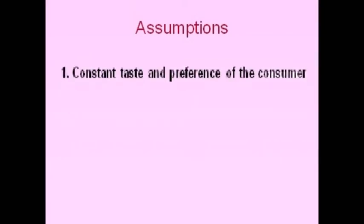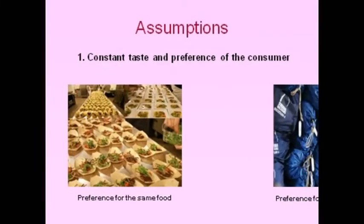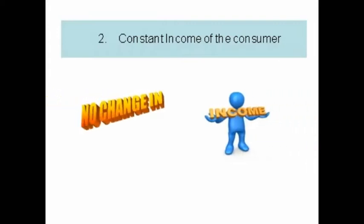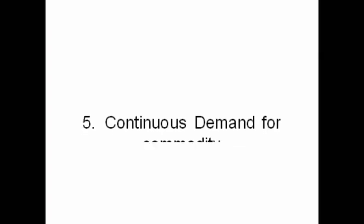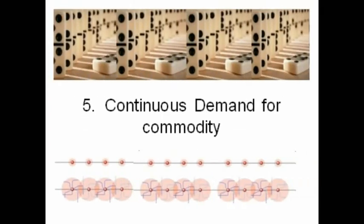Now, the theory of law of demand. The law of demand is based on certain assumptions. They are: number one, there is no change in consumers' tastes and preferences; number two, income should remain constant; number three, prices of related goods should not change; number four, there should be no close substitute for the goods; number five, the demand for the commodity should be continuous.